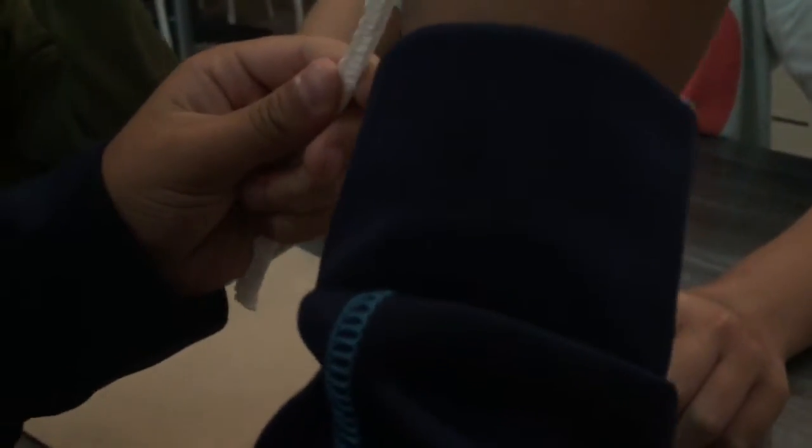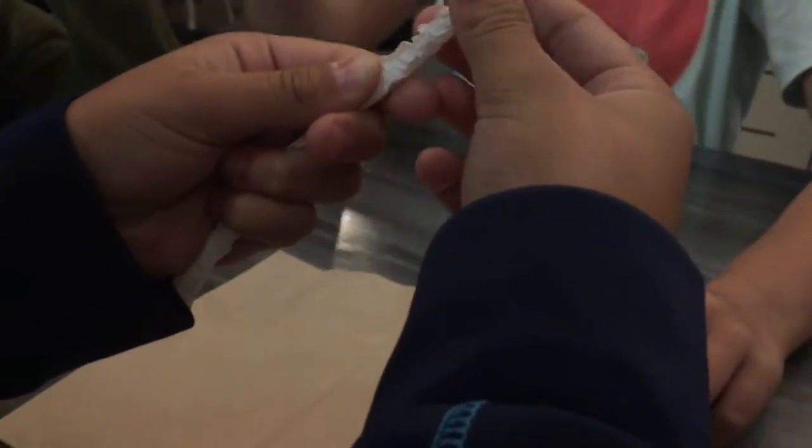Guys, we're going to be making a caterpillar today, and it's actually going to crawl. So first of all, you have to take your straw and take the wrapper off like this. Then take it off.